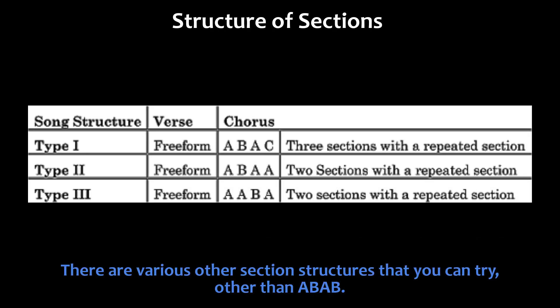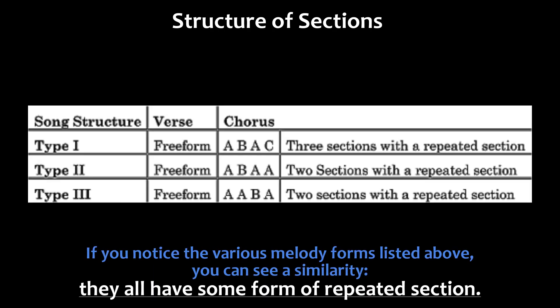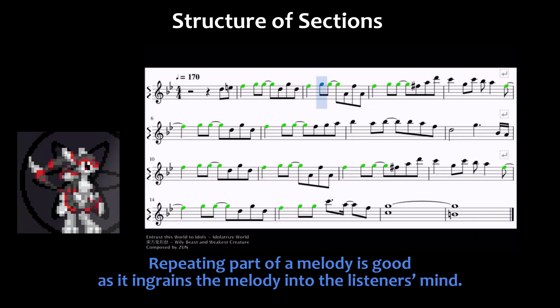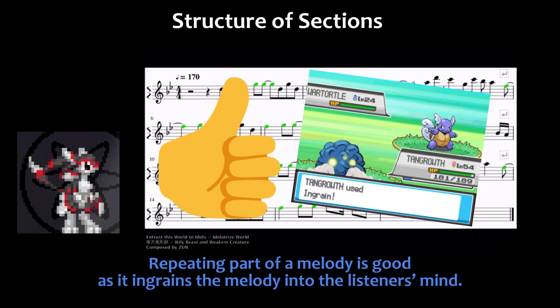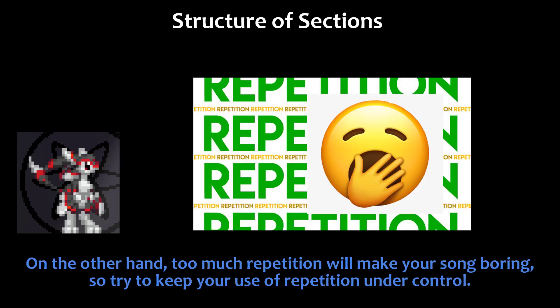There are various other section structures you can try other than ABAB. For example, your section may have an ABAC form, which is similar to ABAB in that the melody is repeated until partway through, at which point the melody ends in a completely different way. All these forms share some form of repeated section. Repeating part of a melody is good, as it ingrains the melody into the listener's mind. However, too much repetition will make your song boring, so try to keep your use of repetition under control.